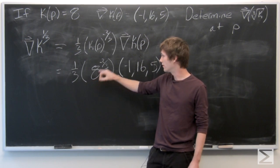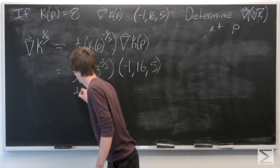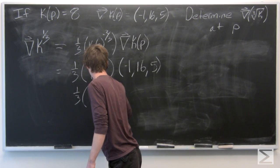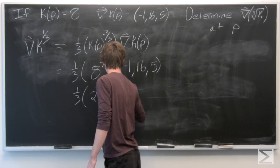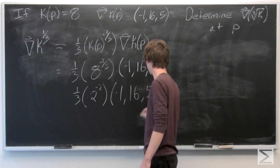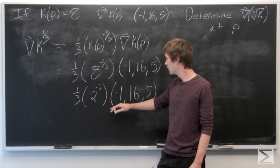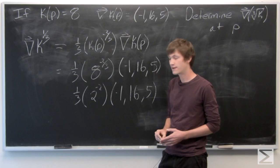So we can take the third root of 8, which is 2. And we get 1 third times 2 to the power of negative 2 times the vector negative 1, 16, 5.